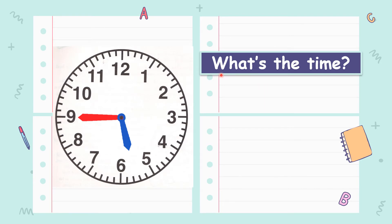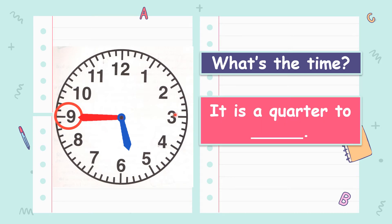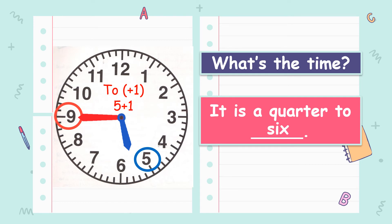Let's try this example. What's the time? Where is the minute hand? Yes, it shows 9. So when you see 9, what should you say? It is a quarter to. Now, the hour hand shows — not 6, it shows 5. When you see the word to, you need to add 1. So the answer would be: it is a quarter to 6. 5 plus 1 equals 6. Very good.